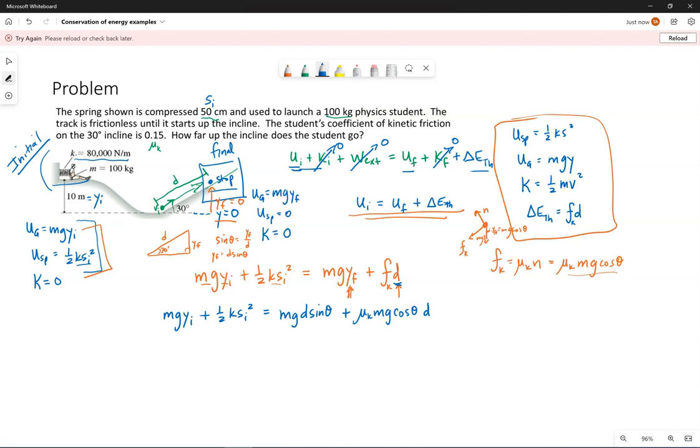Now, if you watch the last example problem with the runaway truck, the mass canceled, but it does not in this case. The mass doesn't cancel because of the spring. The energy because of the spring does not depend upon the mass of the student. That's okay, we just can't cancel it.